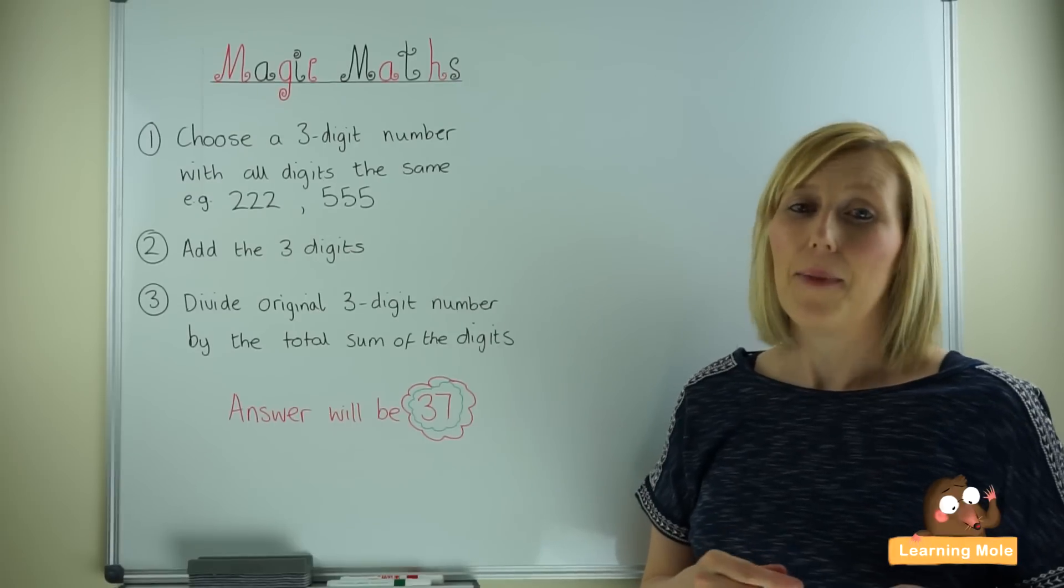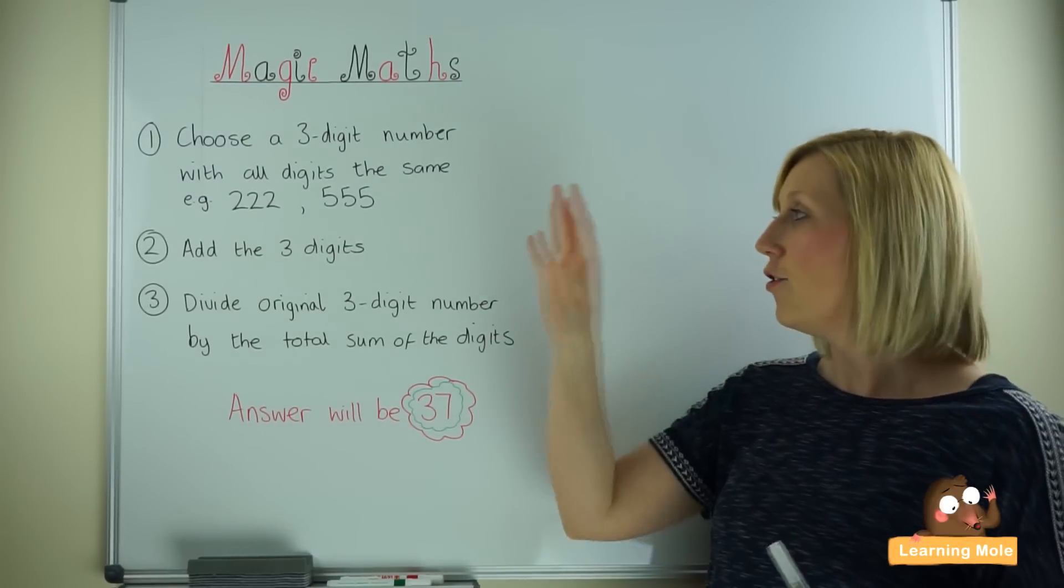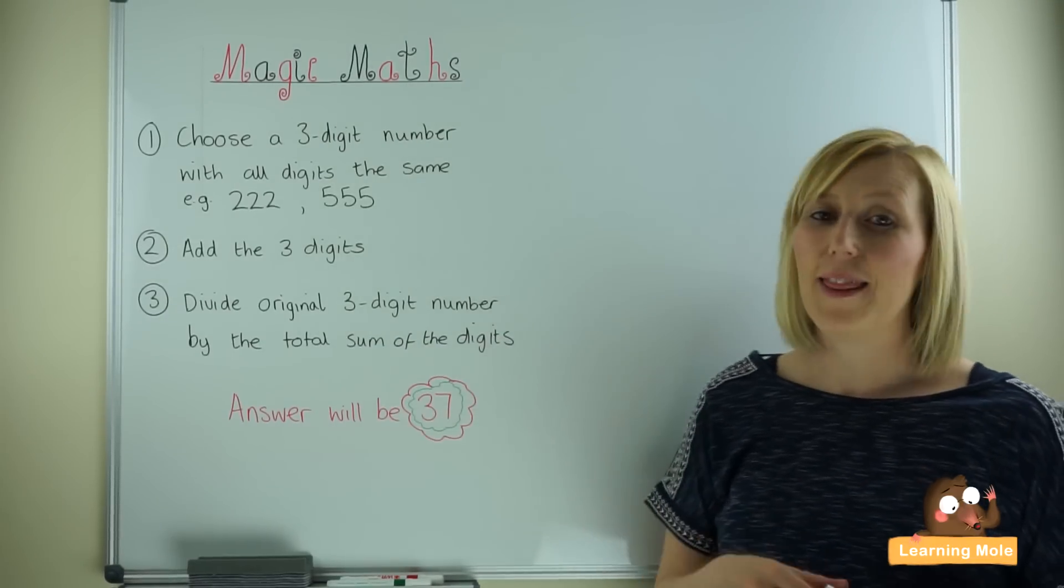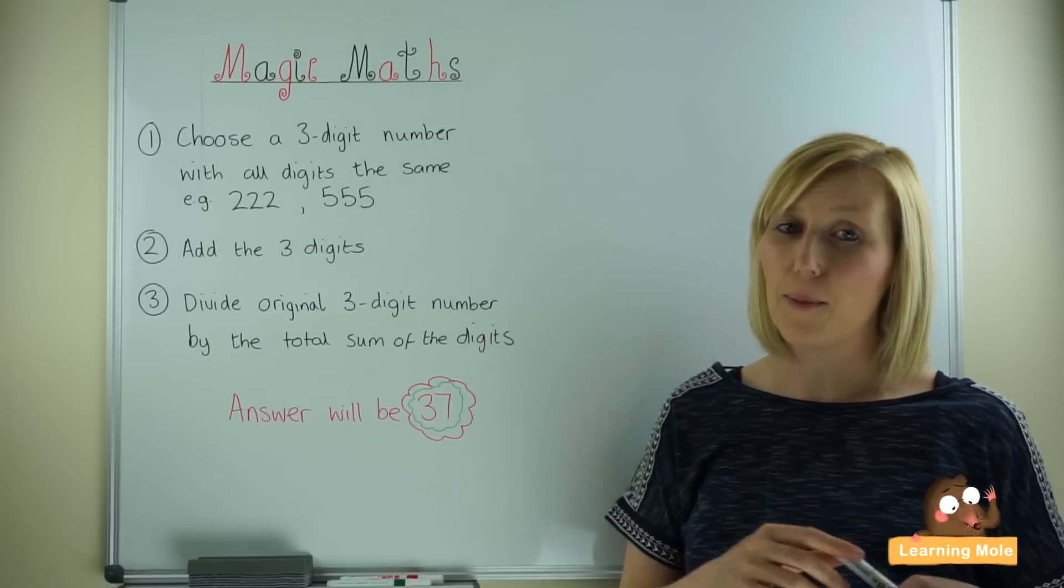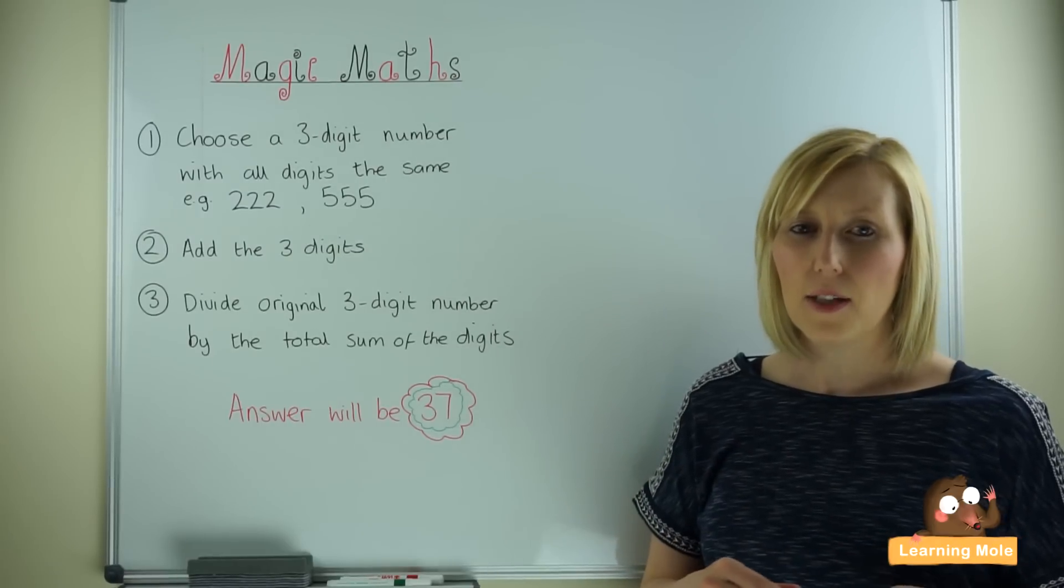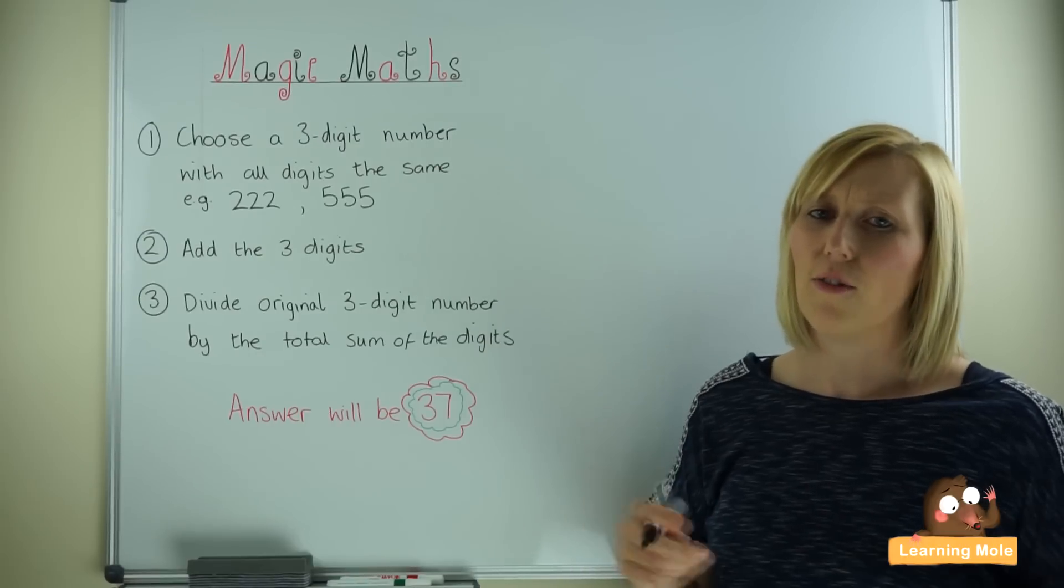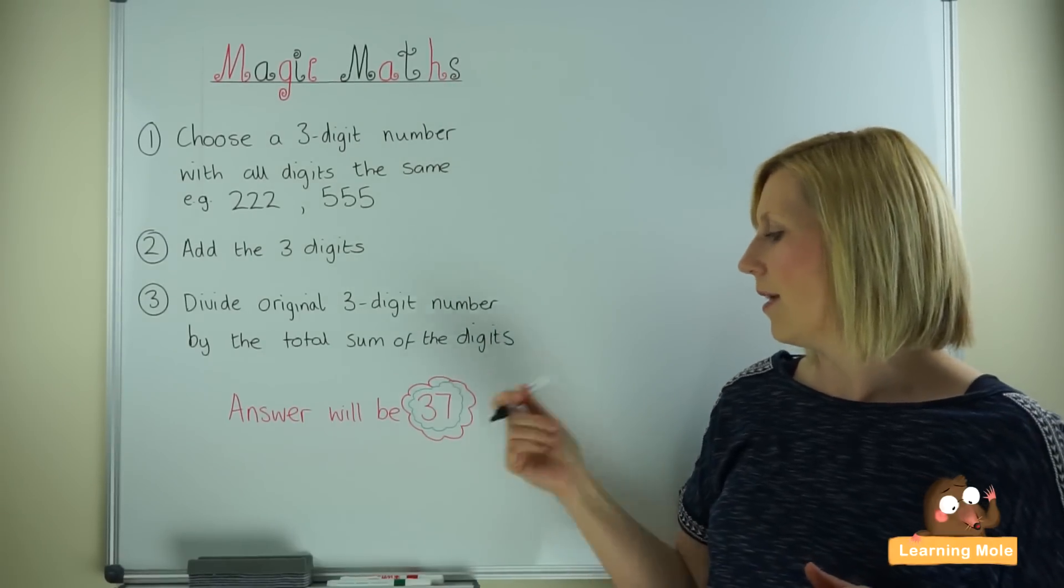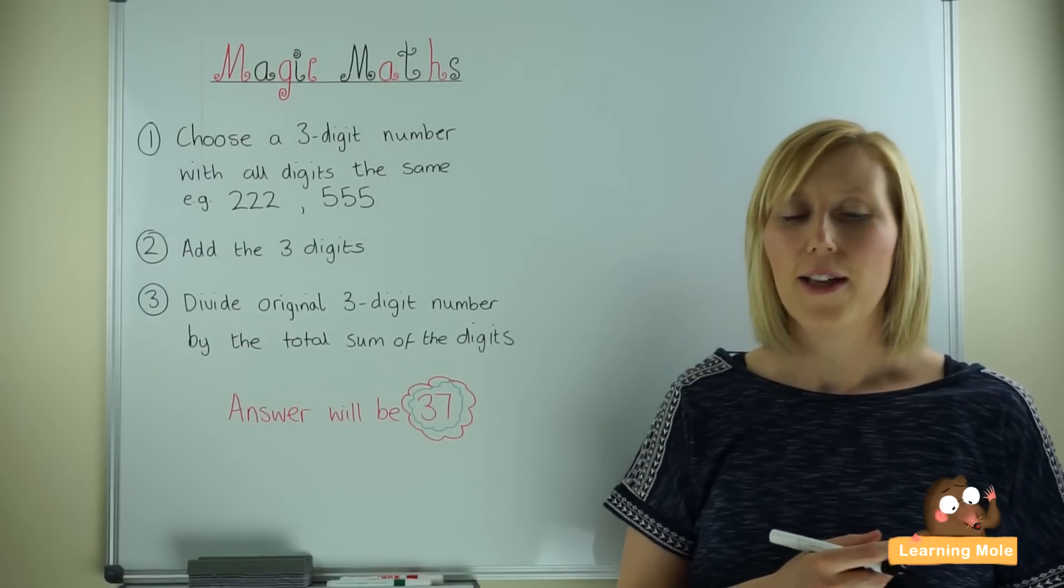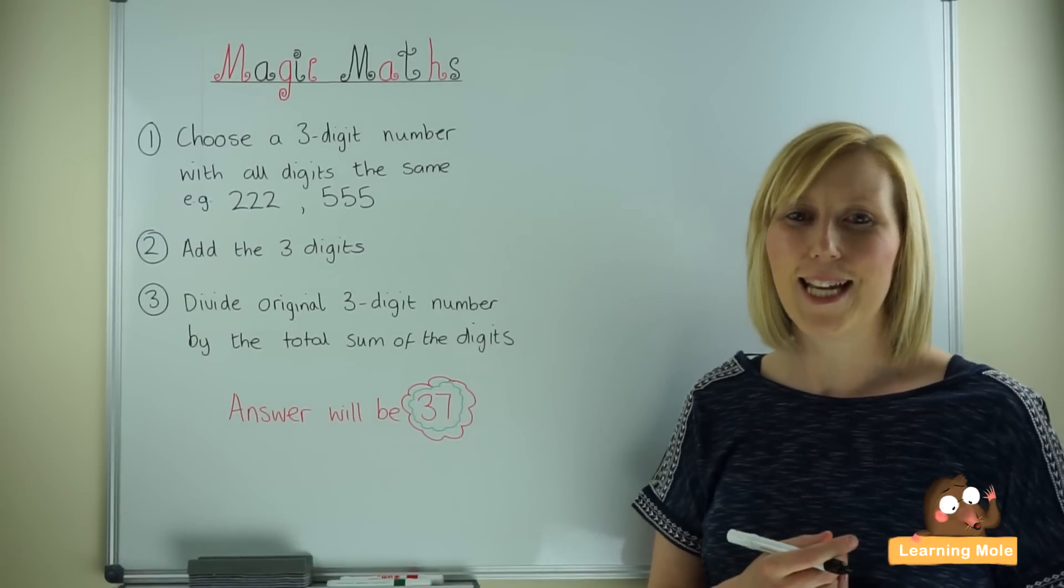Basically, the idea of Magic Maths is that your child is given a formula. They then use this formula on unsuspecting victims and always get the same answer - they're able to predict the person's answer before they even reach it. They should also be calculating with the person to make sure that person is calculating correctly. If they don't get to the answer 37, then the person completing the challenge has made an error somewhere in their calculations, and I'm sure your child will delight in telling them that and helping them fix it.